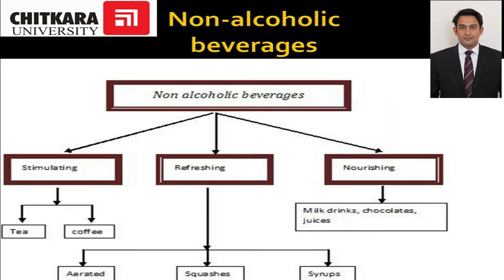Non-alcoholic beverages can be classified into three categories. The first is stimulating beverages — beverages which stimulate a human being or the nervous system. Examples are tea and coffee, because tea contains tannin and a small amount of caffeine, and coffee contains caffeine. These agents stimulate a human being, which is why they are known as stimulating beverages.